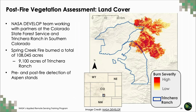From a land cover perspective, I want to highlight a project completed by participants of the NASA DEVELOP program — NASA's Applied Sciences Workforce Development Program. The fall 2020 DEVELOP Colorado team used NASA Earth observations to map the change in Aspen extent in southern Colorado after the 2018 Spring Creek Fire. Partners at the Colorado State Forest Service and the Trinchera Ranch were interested in mapping post-fire Aspen conditions, given the importance of Aspen for wildlife, watershed health, and ecosystem resilience. The fire burned about 108,000 acres total, 9,100 of which were within the Trinchera Ranch management area.